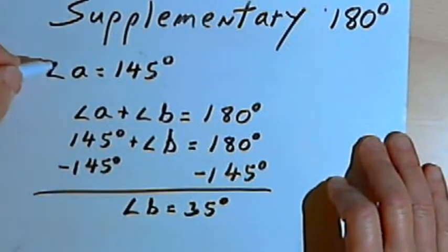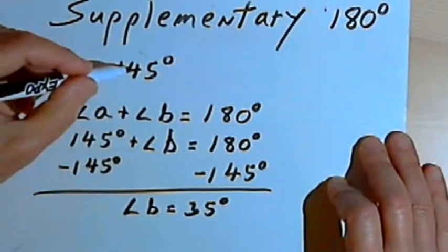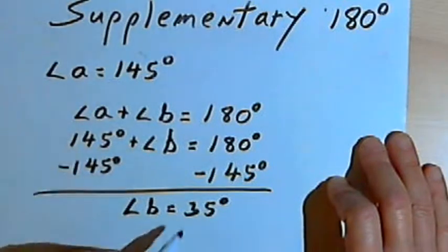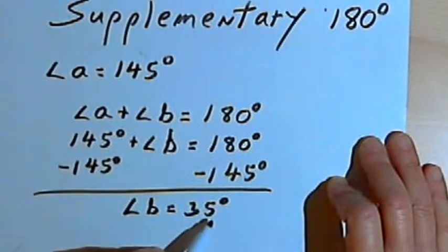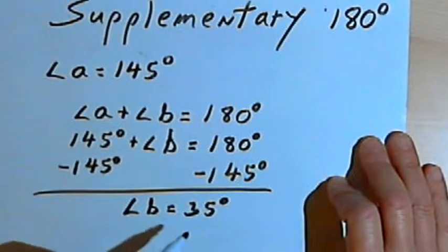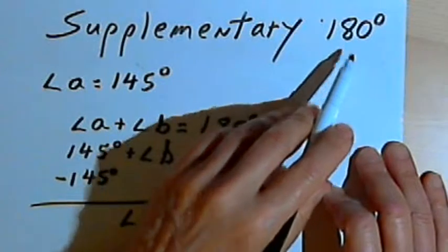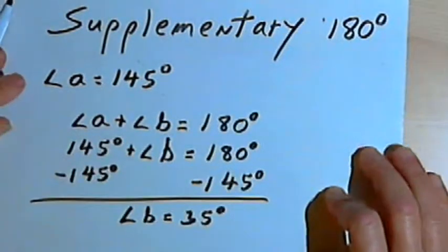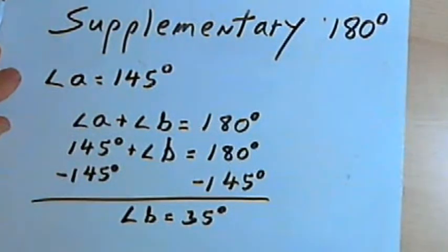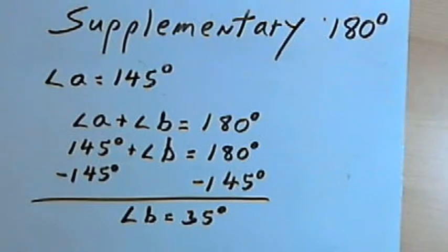So angle A is 145 degrees, angle B is 35 degrees. They add up together to 180 degrees, so they're going to be supplementary. And that's really about all there is to it. Take care — I'll see you next time.